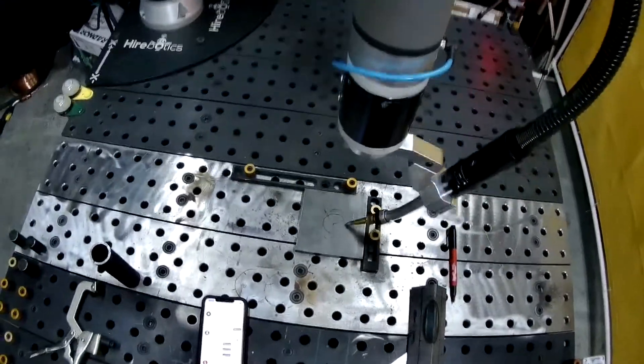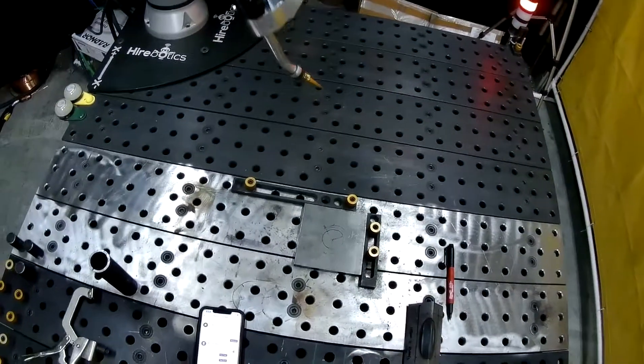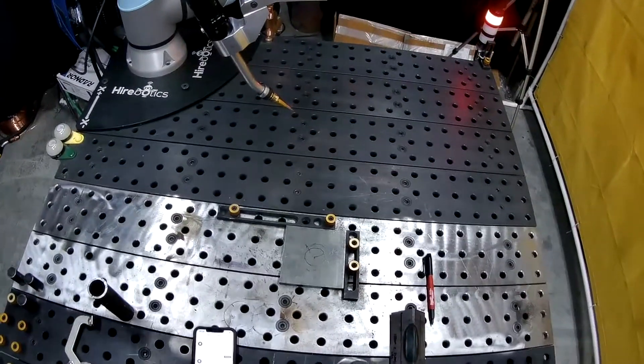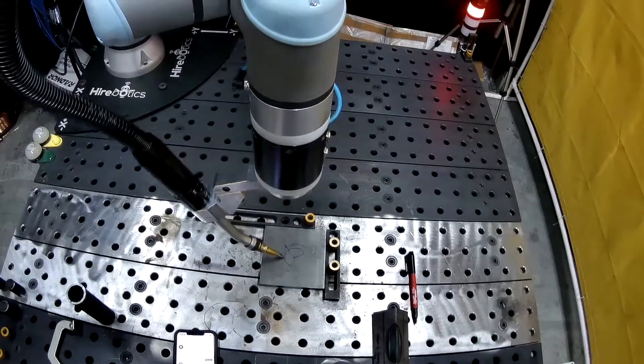You'll see without the weld full circle flag on, we actually stopped at the stop point and we pulled away. If I turn the weld full circle flag on and hit play, now you'll see that we'll do the complete circle all the way around.